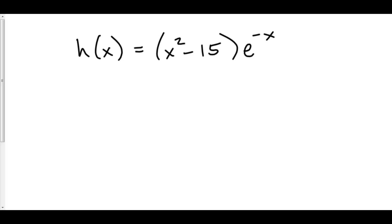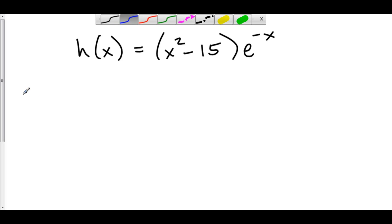Let's do a full analysis including first derivative and second derivative analysis of h(x) = x² minus 15e^(-x). Let's start off by finding our critical points.